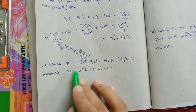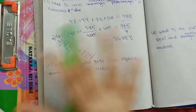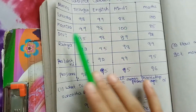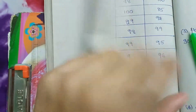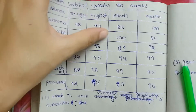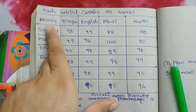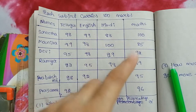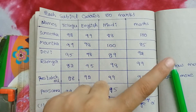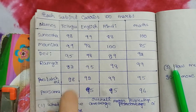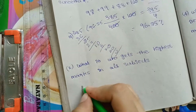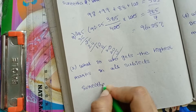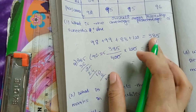Next question: who gets the highest marks in all subjects? To find this, we compare the total marks of each student. First, Sunita's total marks are 385.